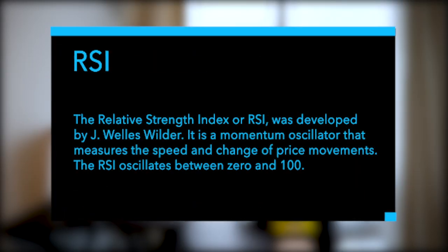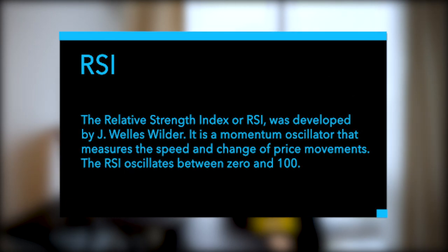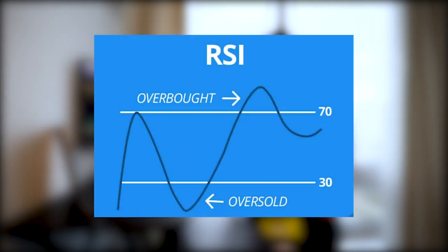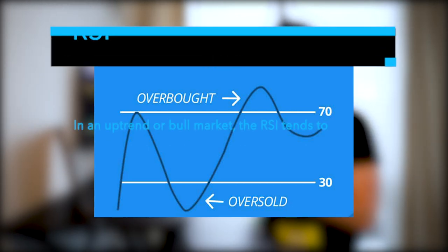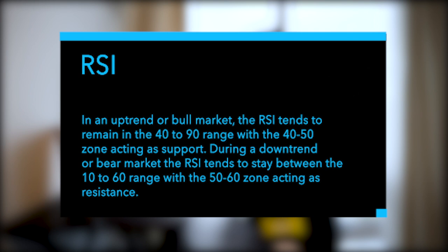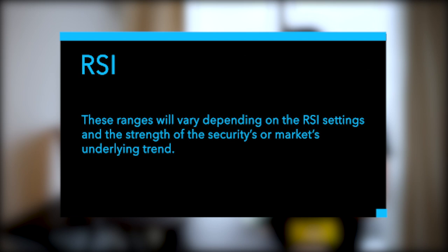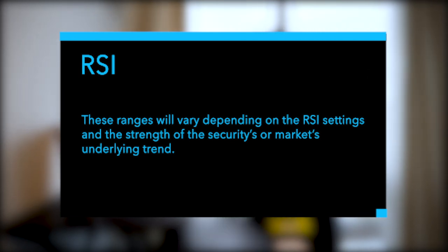The next swing trading indicator we're going to cover is the Relative Strength Index, or RSI, developed by J. Welles Wilder. It's a momentum oscillator that measures the speed and change of price movements, oscillating between zero and 100. Traditionally, the RSI is considered overbought above 70 and oversold when below 30. In an uptrend or bull market, the RSI tends to remain in the 40 to 90 range with the 40 to 50 zone acting as support. During a downtrend or bear market, it tends to stay between 10 and 60, with the 50 to 60 zone acting as resistance.